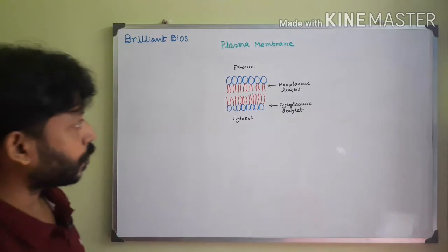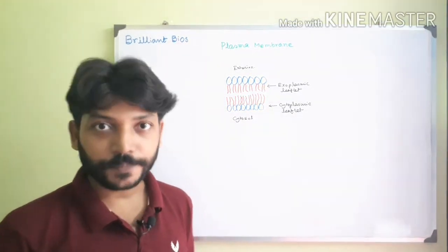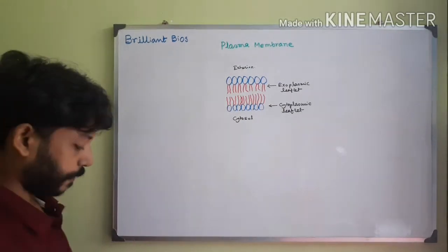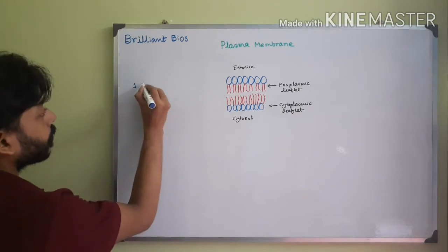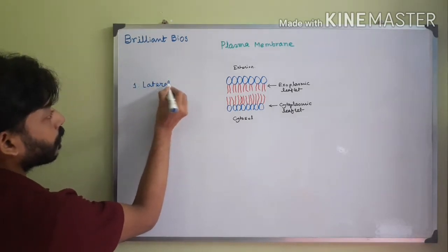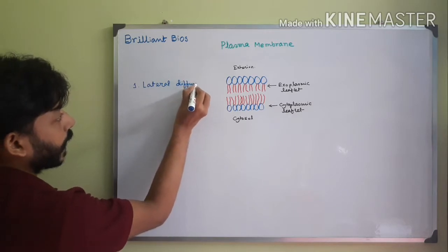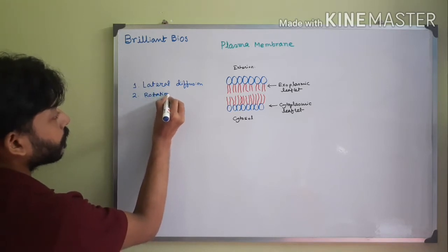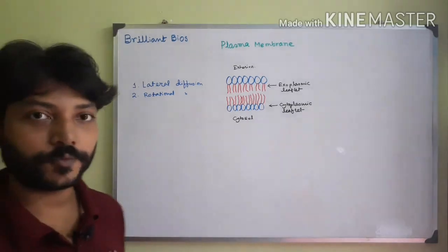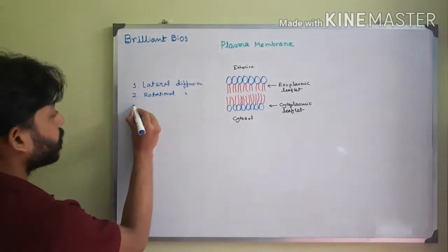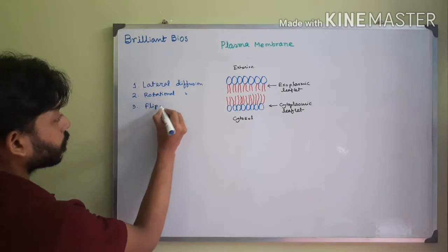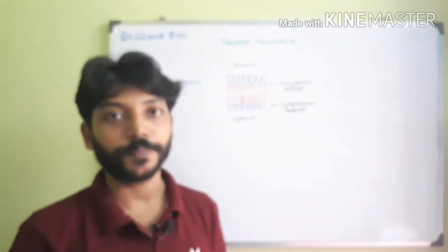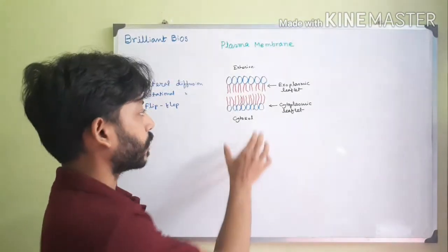The plasma membrane is fluidic in nature and has a bilayer structure. This plasma membrane performs three types of movement: the first is lateral diffusion, the second is rotational movement, and the third is flip-flop. So there are three types of movement that can be performed by lipid molecules present in the plasma membrane.